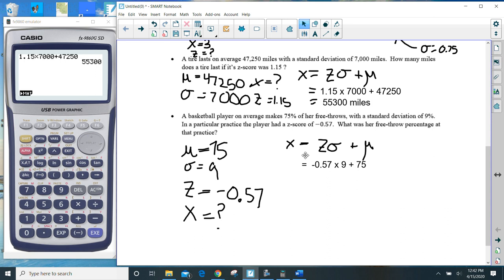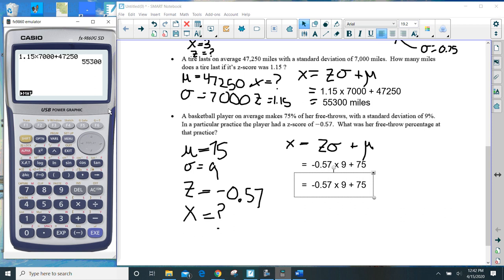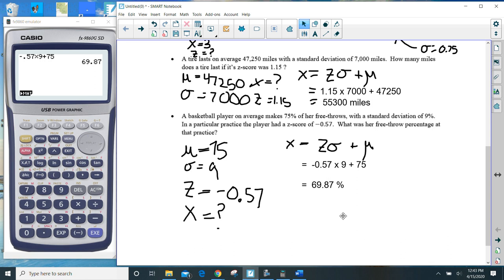And so this is equal to negative 0.57 times 9 plus 75. And so this player, in this particular practice, shot 69.87% on her free throw shots. So that is that.